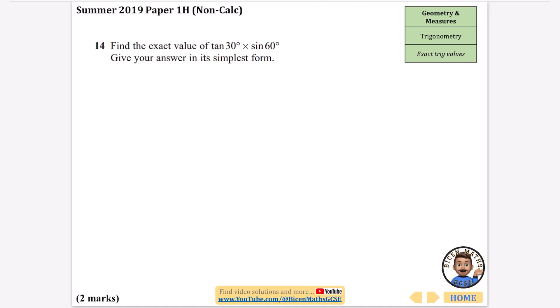This first one, they're obviously going to be from a non-calculator one because for exact values, you can't use your calculator. It wants you to find the exact value of tan 30 times sine 60. You need to know that tan 30 degrees is one over root three, or you might memorize it as root three over three. That's just one of the things you need to memorize.